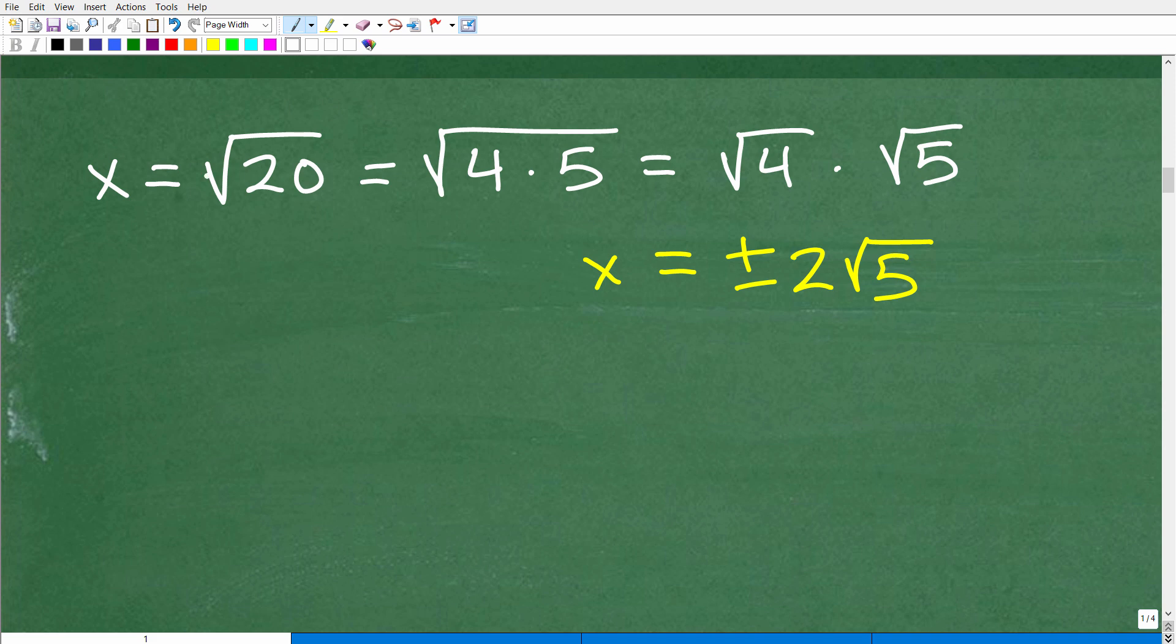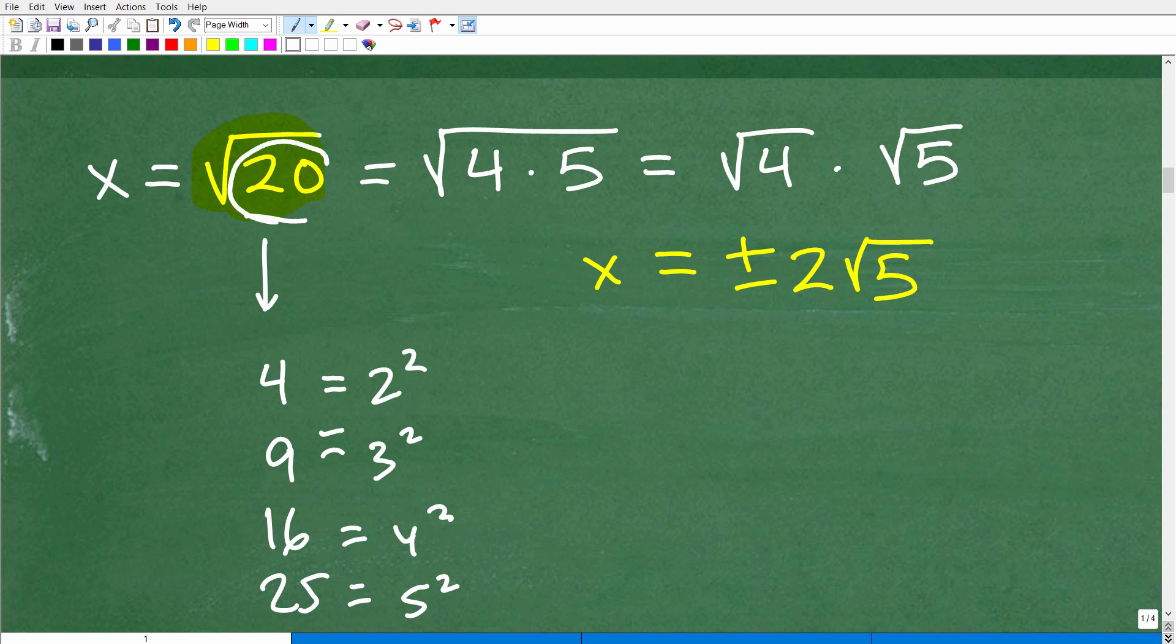We know it's positive and negative square root of 20, but let's just focus in on the square root of 20. Remember, when you're simplifying square roots, you want to be looking for perfect square factors. In other words, we look at this number 20 and want to see, are there any perfect squares that are factors of this number? A perfect square is numbers like 4, 9, 16, 25, et cetera, right? So these numbers—4 is the same thing as 2 squared, 9 is 3 squared, 16 is 4 squared, 25 is 5 squared.